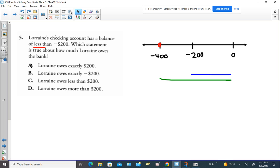Is there any way that A would be true? Lorraine owes exactly $200. Is that what this represents? No, so we're not going to pick that. B, Lorraine owes exactly negative $200.